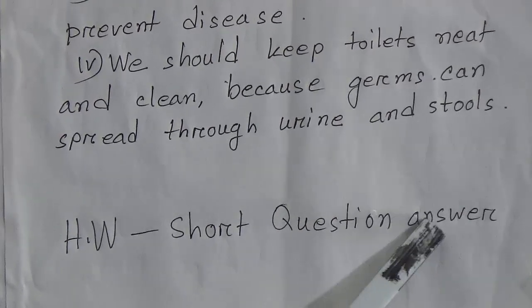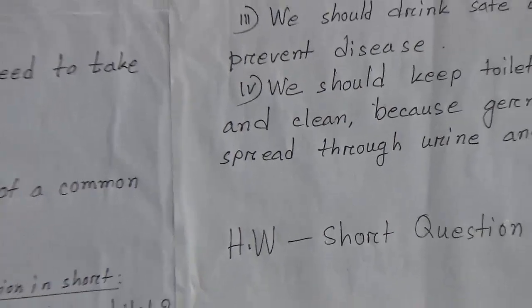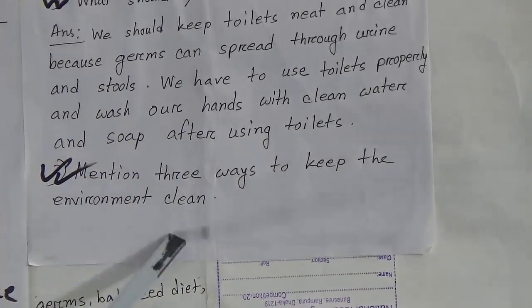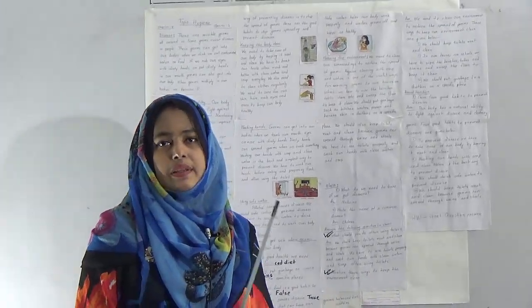Dear students, your SW will be the short question answers — there are two short questions. Number one: what should you do after using the toilet? Number two: mention three ways to keep the environment clean. I hope you have understood today's topic. Keep practicing at home, do your SW in your SW copy, and submit it every Sunday in the school library section. You will get your marks based on this SW. We will see you again in the next class — stay home, stay safe. Thank you.